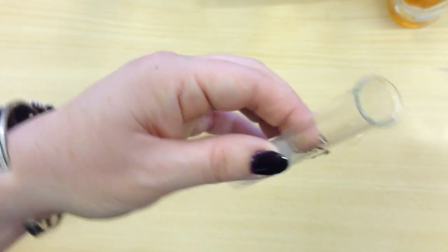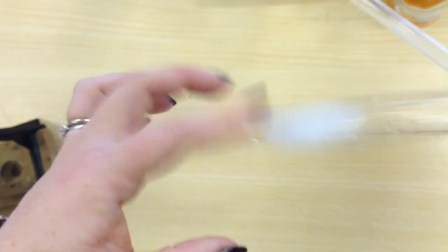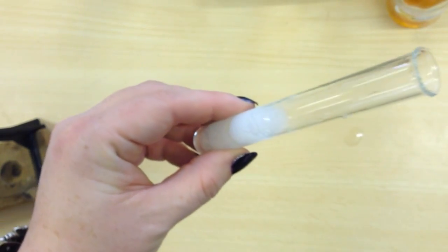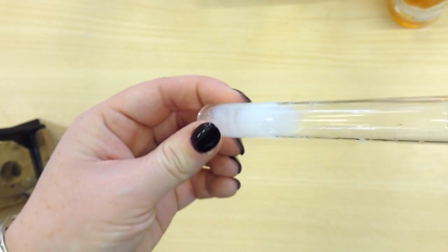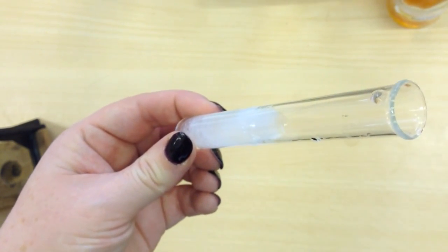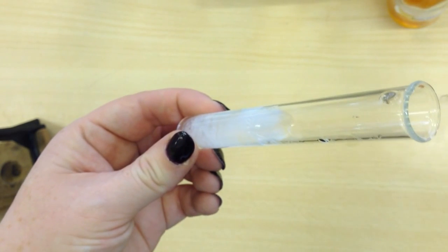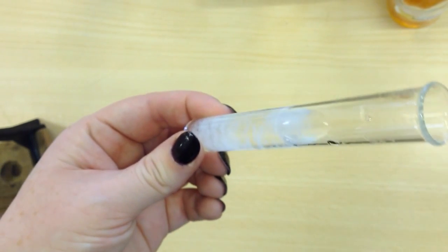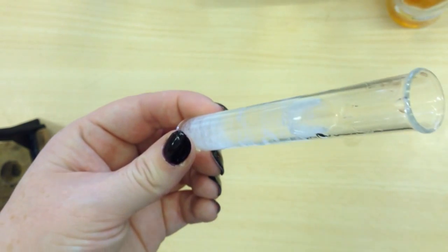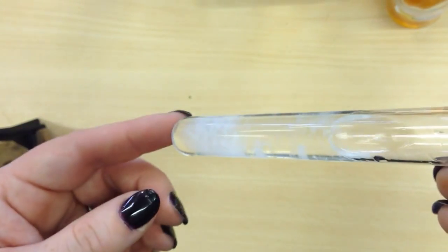And then if I keep adding the sulfuric acid, you can see, especially down the bottom here, it's starting to go clear again. And then when you add excess sodium hydroxide, you can see that the white is starting to disappear and it is going clear again.